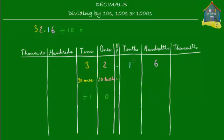After the decimal point we have one tenth. One tenth is the same as ten hundredths, because hundredths is one place lower than tenths in the place value table. And six hundredths is the same as sixty thousandths, because thousandths is one place lower than hundredths. So six hundredths equals sixty thousandths.